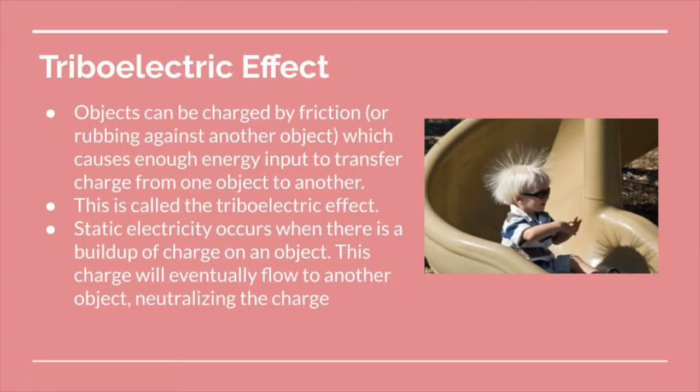One key example of electrostatic force that we experience in everyday life: if you've ever been walking around the house in your socks and touched a metal doorknob and felt a shock, that is an example of the triboelectric effect. The triboelectric effect is when objects are charged by friction or by rubbing against one another. This friction causes enough energy input to transfer charge — electrons are transferred, for example, from the carpet to your socks, and you in effect become charged. The result is static electricity, which occurs when there's a buildup of charge on an object.